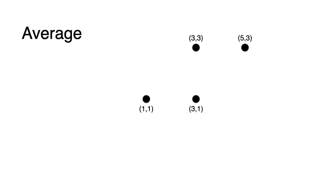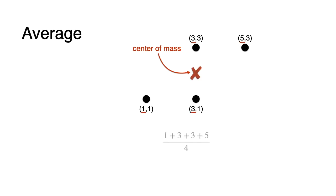Let's start with the average, using a very small dataset of these four points. What is the center of mass? The center of mass, or average, or mean, is right here. First we look at the x-coordinate and take the average of those four: it's 1 plus 3 plus 3 plus 5 divided by 4. Then we do the same thing with the y-coordinate, and we get this point.